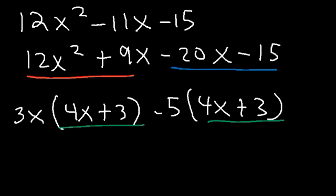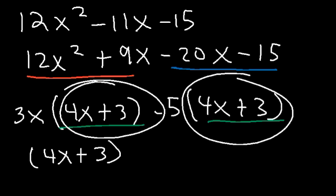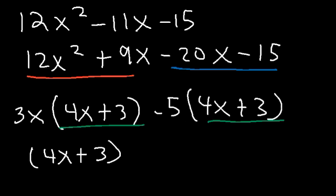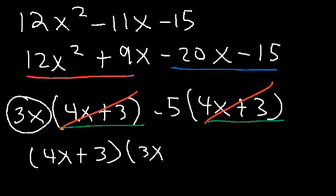If these two terms are the same, then that means that you're on the right track. So now let's factor out 4x plus 3, since that's the common term. If we take out 4x plus 3 in the first term, we're going to have 3x left over. And if we take it out in the second term, we're going to have negative 5 left over.